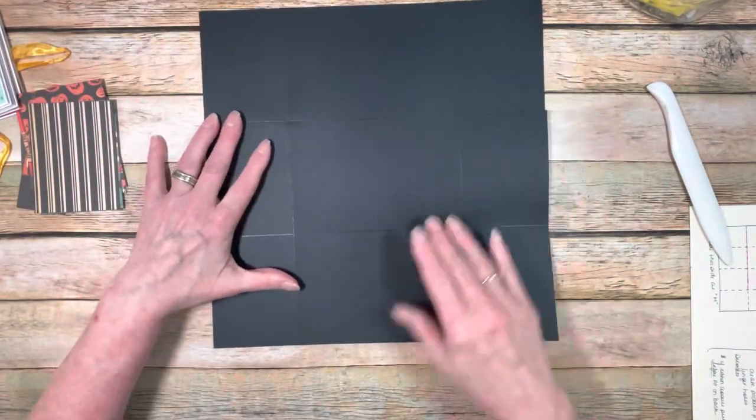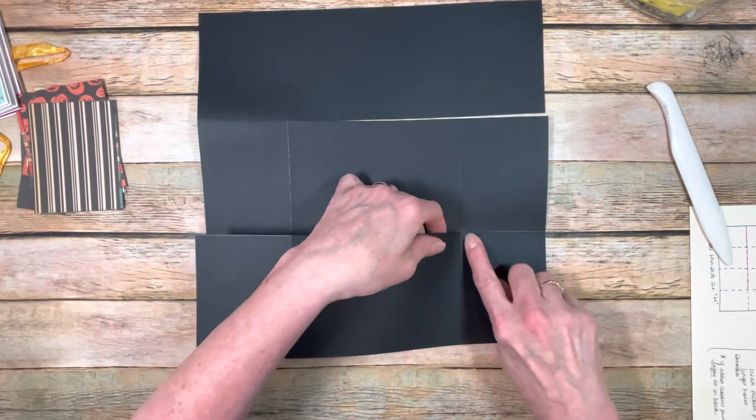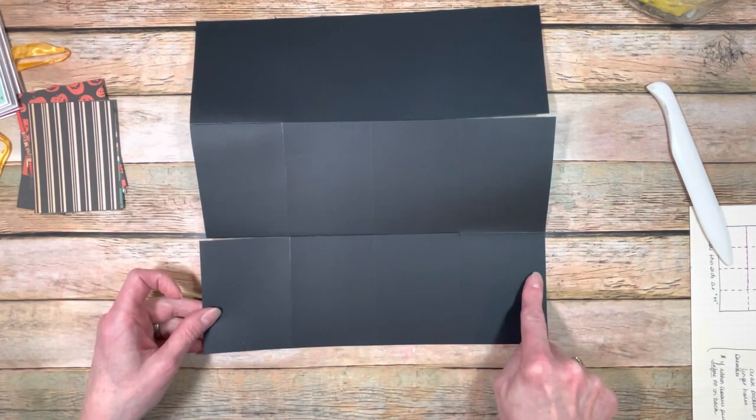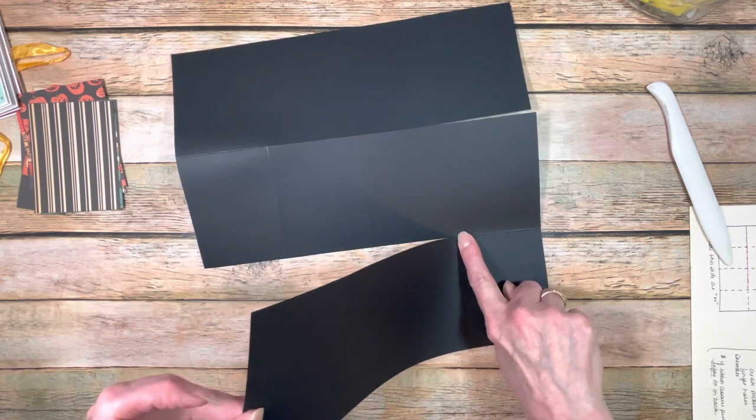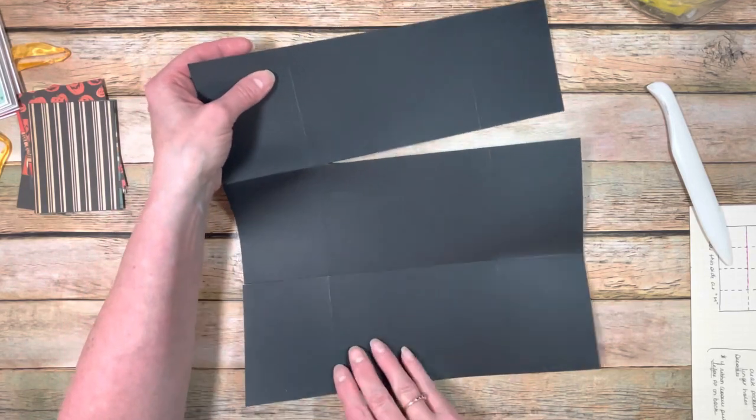So then once you do that, we're going to make some cuts. You're going to cut that score line only to here. Here are the three, six, nine, twelve. Cut this one here, stop there. Cut this one here and stop there. You should end up with like an s-shaped thing.